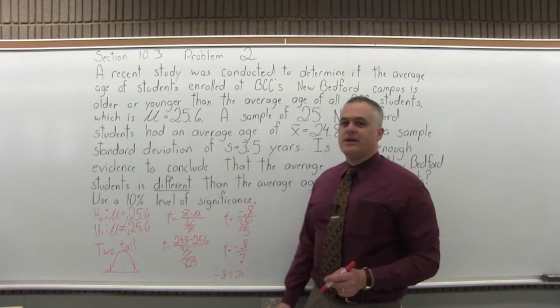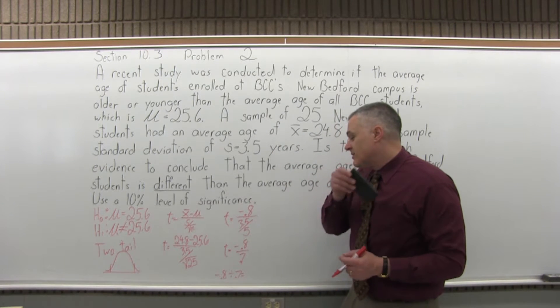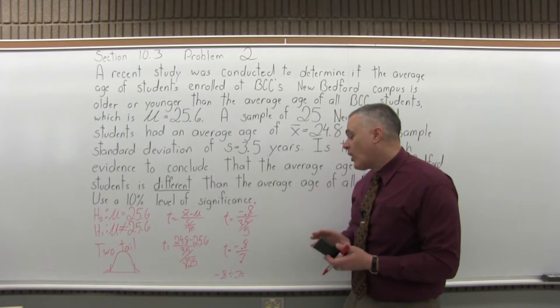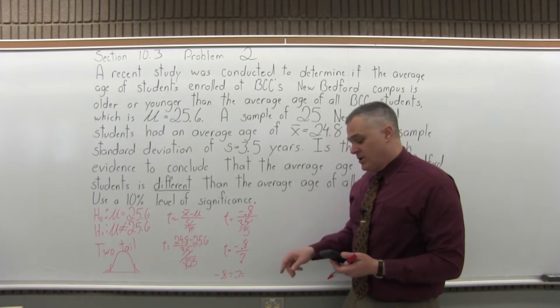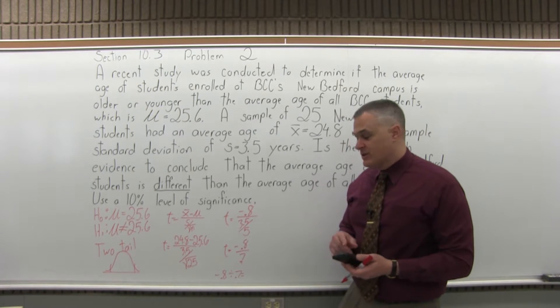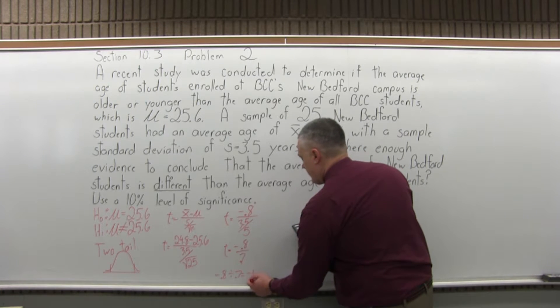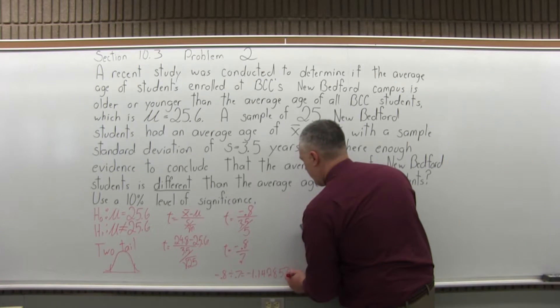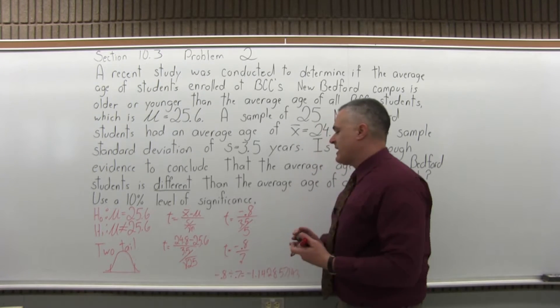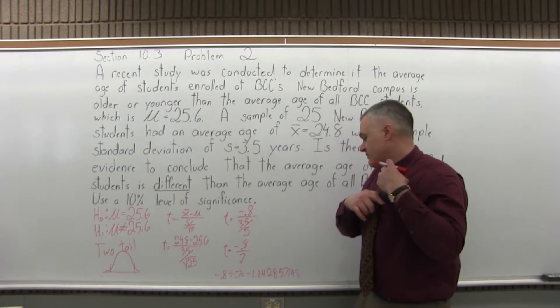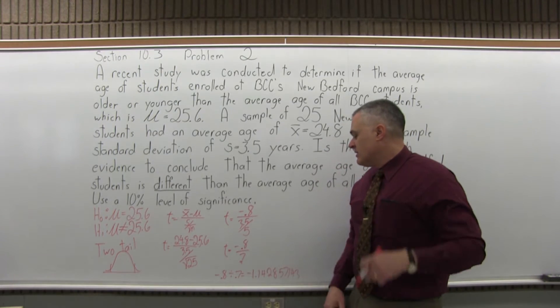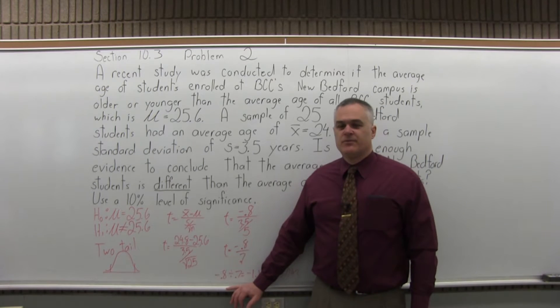And now what we're going to do is negative 0.8 divided by 0.7. Now that doesn't work out as easily. I can see it's a little bit past 1, but beyond that I'd want to use my calculator. So when I enter it into the calculator, the calculator says it is negative 1.142857143. That's my calculated value for t, negative 1.14 with some more digits after that.